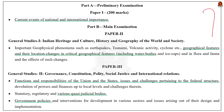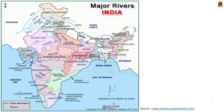Let us start our discussion. First, let us see some data that can be asked in prelims — major rivers of India and the states that have disputes over them. The first is the infamous Cauvery; the states in dispute are Kerala, Karnataka, Tamil Nadu and Union Territory Puducherry. Then River Krishna: the states in dispute are Maharashtra, Andhra Pradesh, Karnataka and Telangana. Then Godavari: the states in dispute are Maharashtra, Andhra Pradesh, Karnataka, Madhya Pradesh and Odisha.